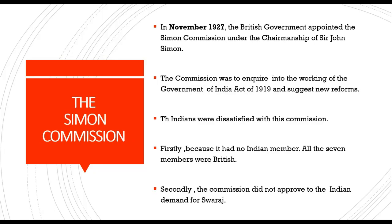The next topic is the Simon Commission. In November 1927, the British government appointed the Simon Commission under the chairmanship of Sir John Simon. The commission was to enquire into the working of the Government of India Act of 1919 and suggest new reforms. The Indians were dissatisfied because the commission had no Indian member — all seven members were British — and it did not approve the Indian demand for Swaraj.